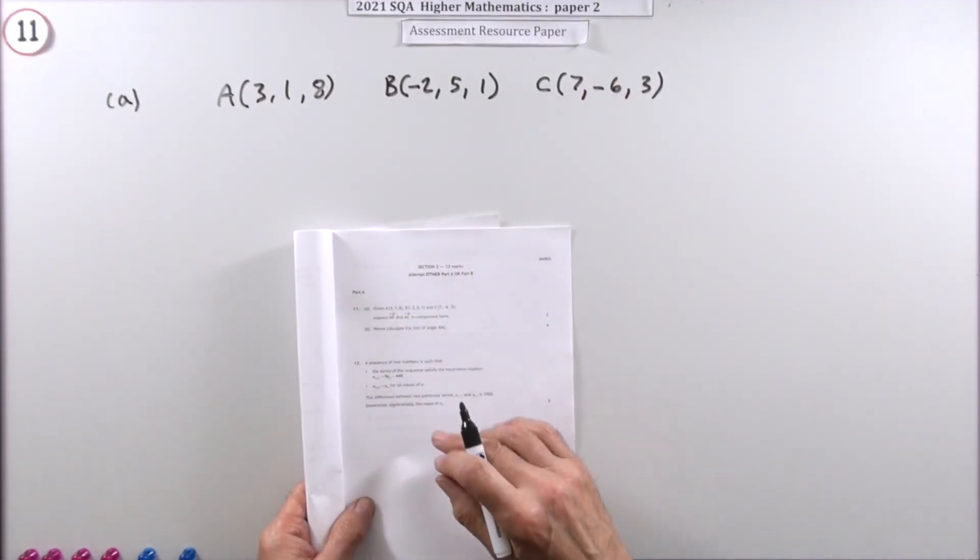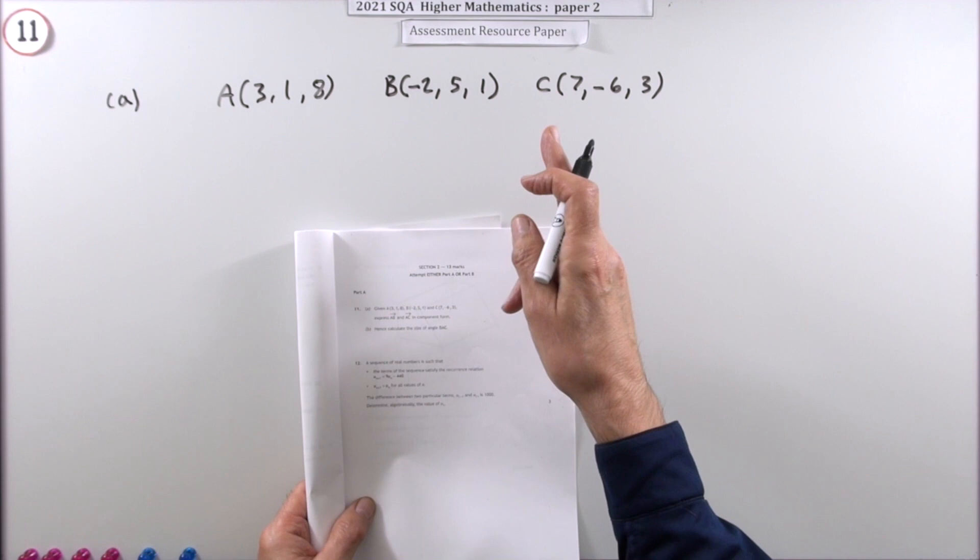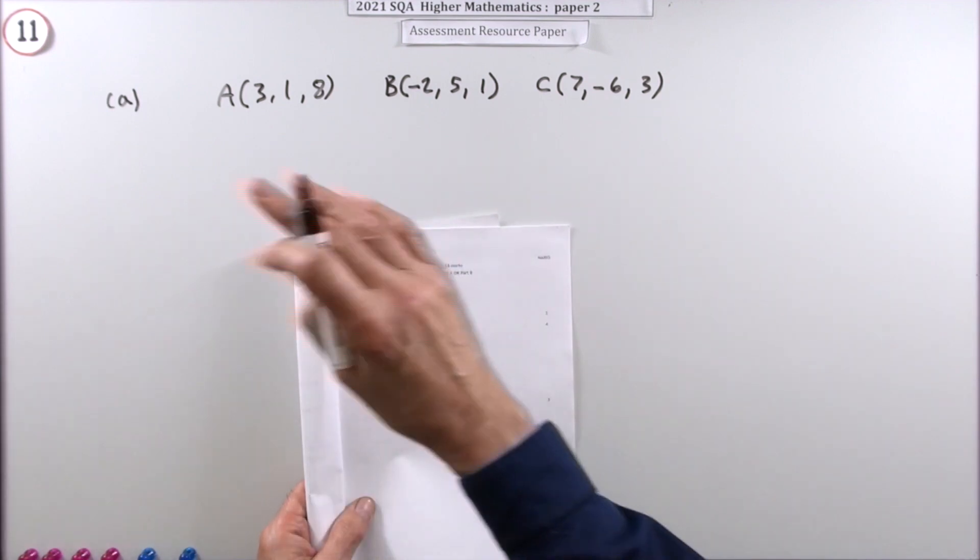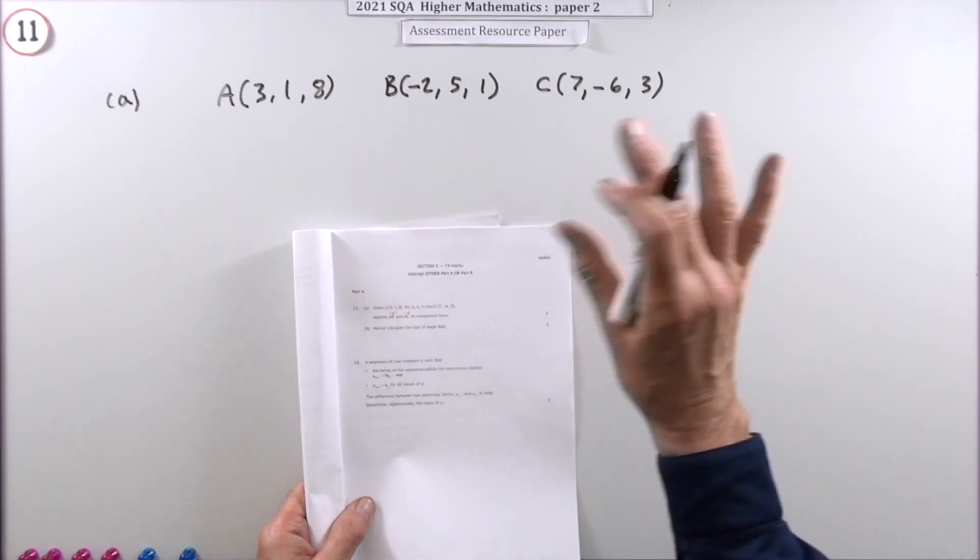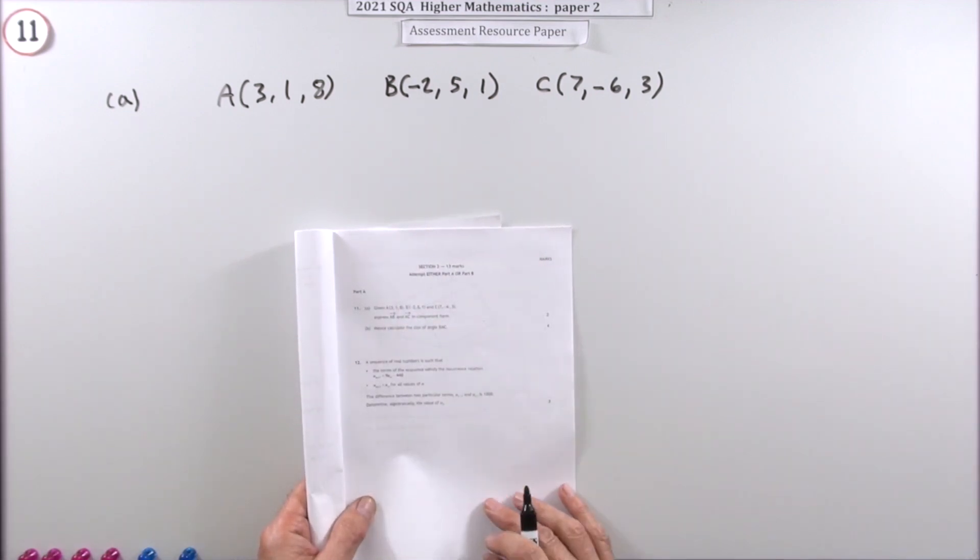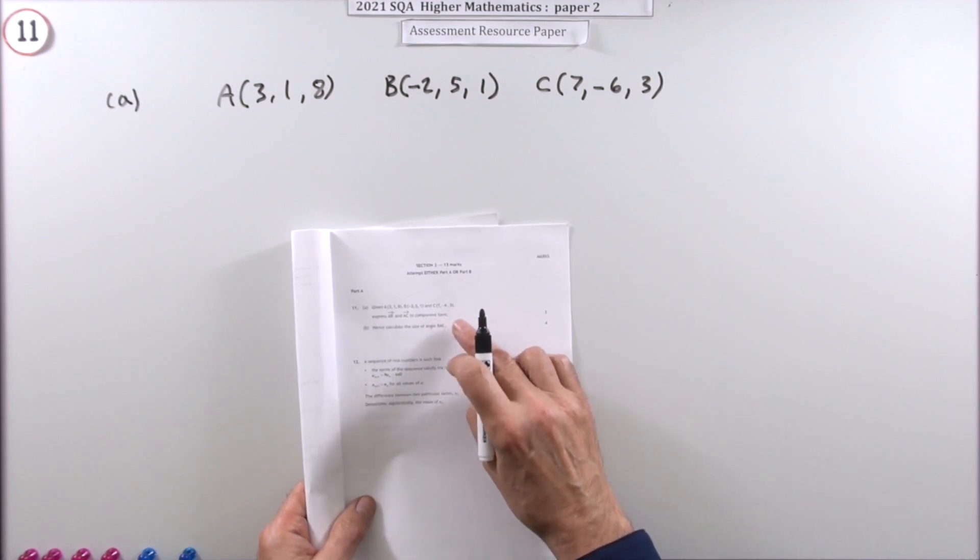So question 11 then from paper 2 of the 2021 Higher Maths Resource Paper. This is where it splits into two parts. Part A, the vectors, recurrence relations. Part B, that's the alternative, the circles and the logs. So part A has the vectors, starts off with the vectors.